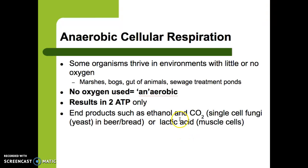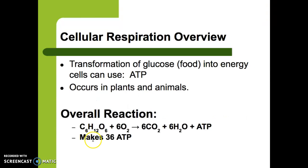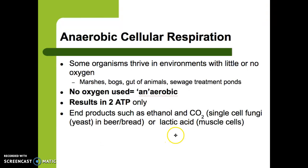We as eukaryotic organisms can also do anaerobic cellular respiration if we're doing a lot of exercise and straining our body — like marathon runners who burn through the oxygen in their bodies. When there's no oxygen left, we switch over to anaerobic cellular respiration, where instead of making 36 ATP we now only make 2 ATP. This process is called lactic acid fermentation, and it happens in our muscle cells. The lactic acid causes that burning sensation in your muscles because acid is being produced.